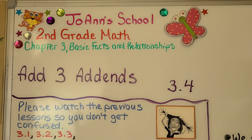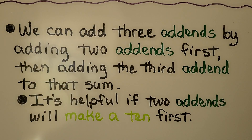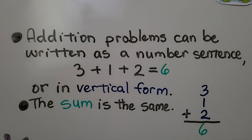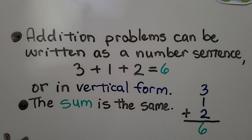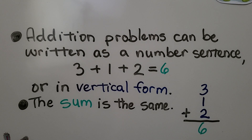Lesson 3.4: Add 3 addends. We can add three addends by adding two addends first, then adding the third addend to that sum. It's helpful if two addends will make a 10 first. Addition problems can be written as a number sentence, also called an equation. Three plus one plus two is equal to six.